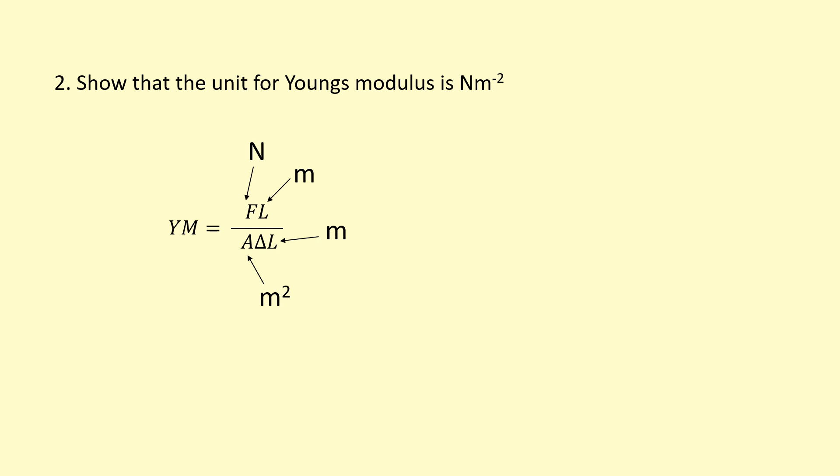Let's start with the top: we've got force times length, which is newtons times meters. At the bottom we've got area times extension, which is meters squared times meters, and that becomes meters cubed at the bottom.